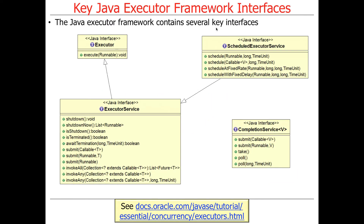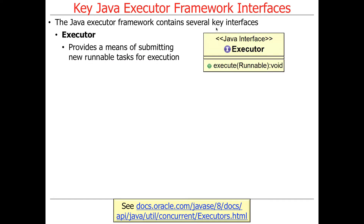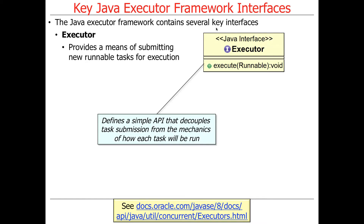The Java executor framework contains several key interfaces — that's one of the things that makes it a framework. It's got a bunch of pieces that work together to provide a more powerful and flexible set of services for running things concurrently. The Executor interface is very simple: it has one method called execute, and it's used to submit a runnable task for execution. This API is intentionally simple. Its key purpose is to decouple the task submission interface from the mechanisms used to actually execute the task, giving you a level of indirection where you can change the way things run without changing how the client application submits work.